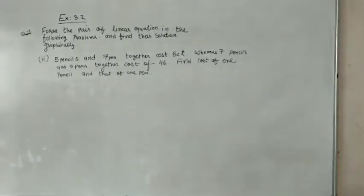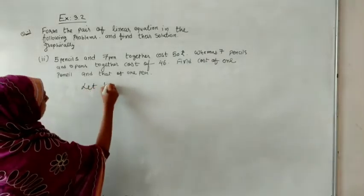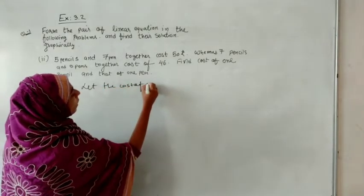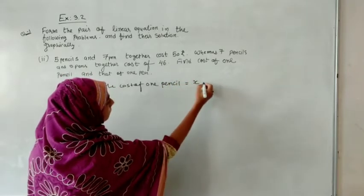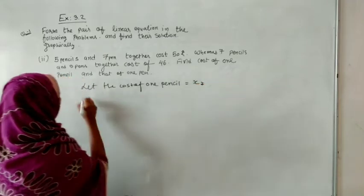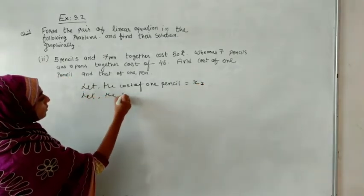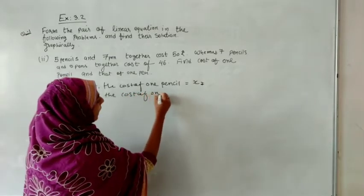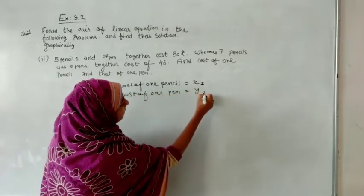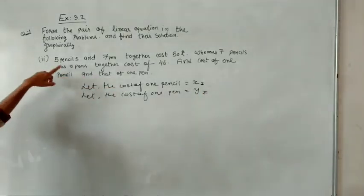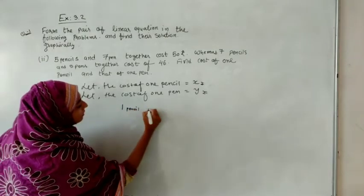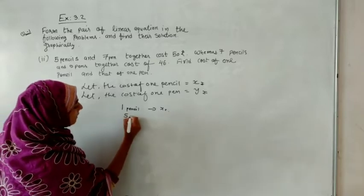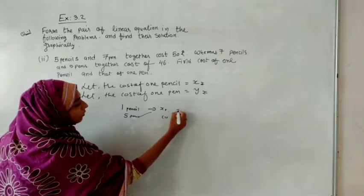Now the next problem: 5 pencils and 7 pens together cost 50 rupees. Let the cost of 1 pencil be x rupees. Let the cost of 1 pen be y rupees. So if 1 pencil costs x rupees, then 5 pencils will cost 5x rupees.